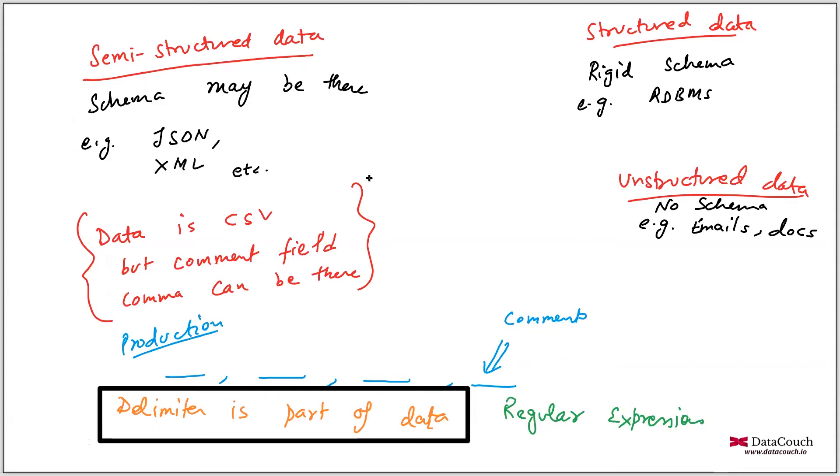Let's talk about semi-structured data, structured data, and unstructured data. Structured data is when we have a rigid schema. This rigid schema means it is structured data, and this is RDBMS - relational databases are structured.